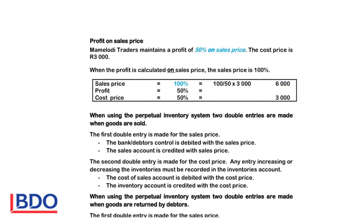They maintain a profit of 50% on sales price, therefore sales price is 100, profit 50, cost price 50. The cost price is given as R3000, so if I want to calculate the sales price, the percentage that I want — 100 — divided by the one that I know — 50 — times 3000, and that will give me R6000.